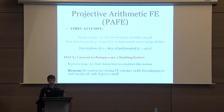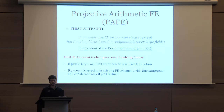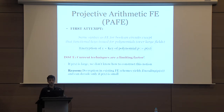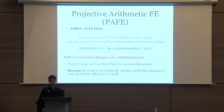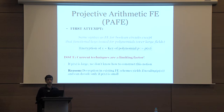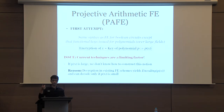The problem is that we don't know how to achieve this, and current techniques seem to be a limiting factor for such a strong notion. In particular, if the output of the arithmetic circuits—or you can view it as a polynomial—is large, then we don't know how to construct this. For FE schemes for inner products based on bilinear maps, decryption works such that the output of the computation is available as the exponent of a group, and you recover this output by performing discrete log—which you can only do if the output is small.